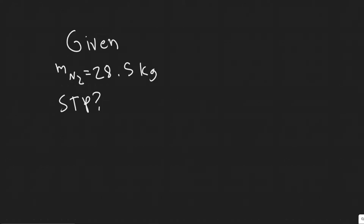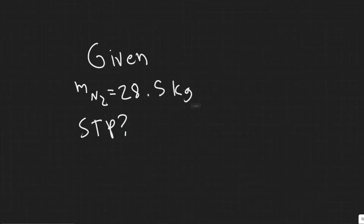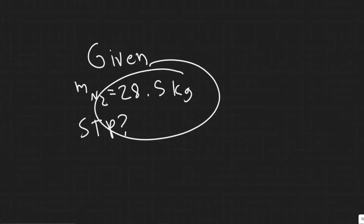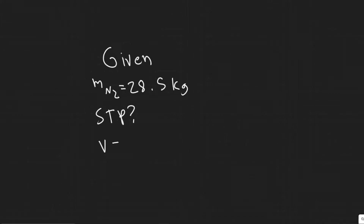In this problem we're told a storage tank at STP contains 28.5 kilograms of nitrogen N2. Part A asks what is the volume of the tank. Part B asks what is the pressure if an additional 25 kilograms of nitrogen is added without changing the temperature. The first thing to do is write out the given: mass of N2 is 28.5 kilograms, solve for volume V, and find the new pressure after adding 25 kilograms.